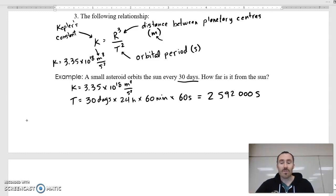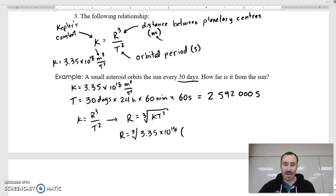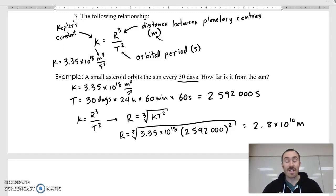So now we have the k and the t value. Now we can figure out the r value. So k equals r cubed over t squared. And we can rearrange that to get the r by itself. So the r value, the distance from the center of the sun to the center of the asteroid, is the cube root of kt squared. So we get r equals the cube root of 3.35 times 10 to the 18 times 2,592,000 squared. Cube rooting all of that gets us 2.8 times 10 to the 10 meters. That's the distance from the center of the sun to the center of the asteroid.